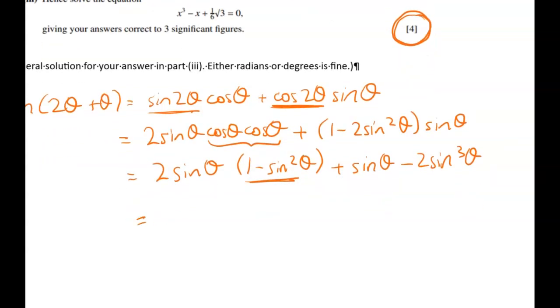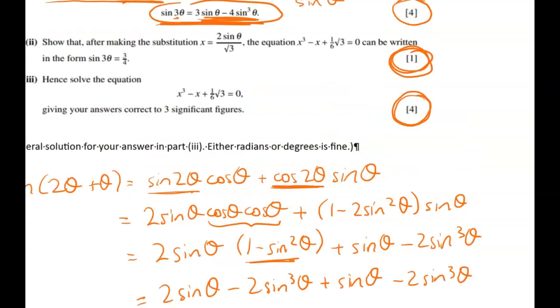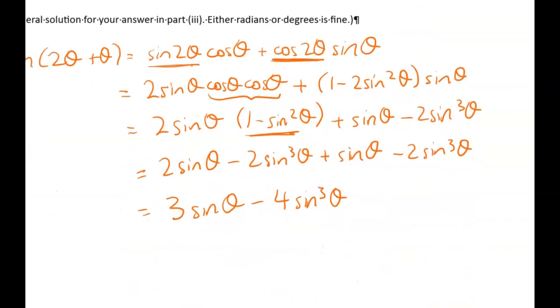So cleaning this up gives me two sine theta minus two sine cubed theta plus sine theta minus two sine cubed theta. And now we just have to collect up our like terms and we're going to get three sine theta minus four sine cubed theta. Right I think that's what we had to show. Yep exactly. So the last thing we're going to write is equals the right hand side as required.